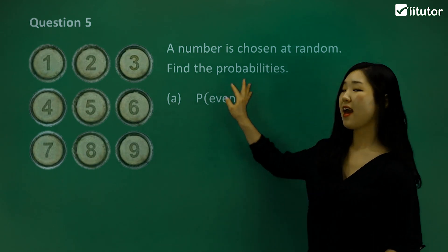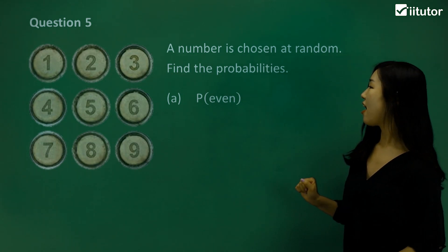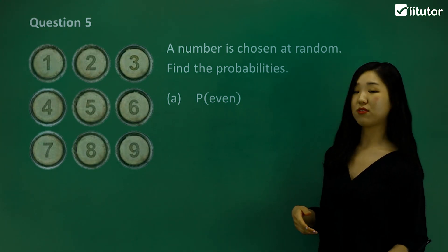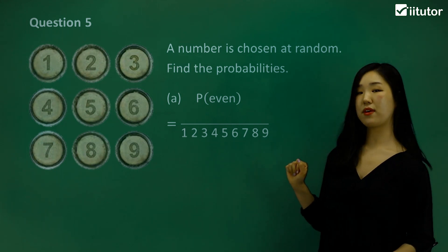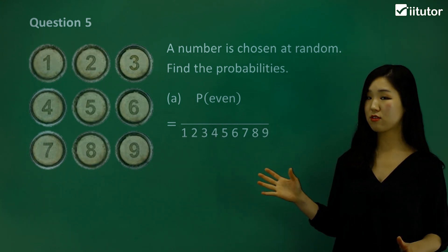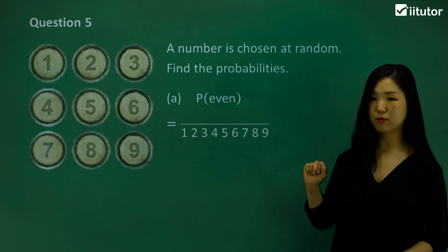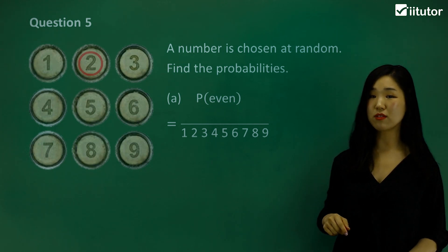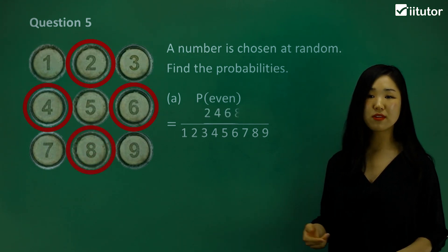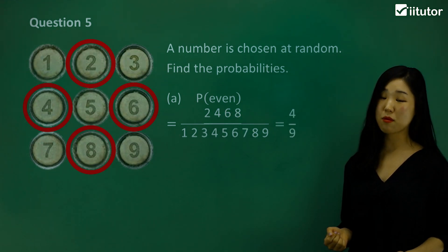Question 5: a number is chosen at random from the numbers shown. Let's find the probability of an even number. All the possible numbers are 9 — we have 1 all the way through to 9, so there are 9 possible outcomes as the total. We put the number of the event we're looking for over the total number of outcomes. Counting the even numbers: 2, 4, 6, 8 — that's 4 even numbers out of 9. So 4 out of 9 is the probability of even.